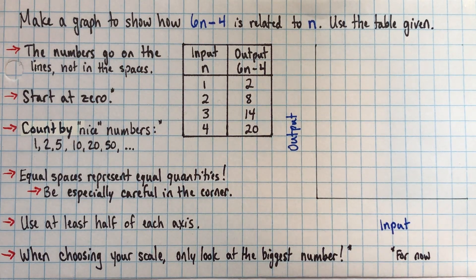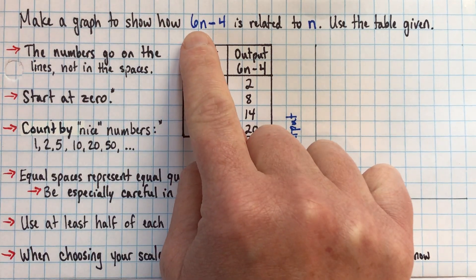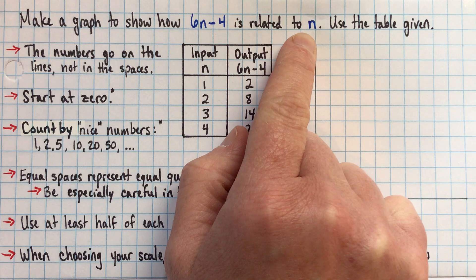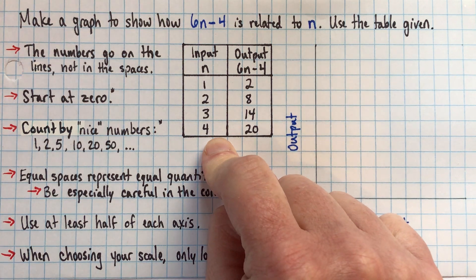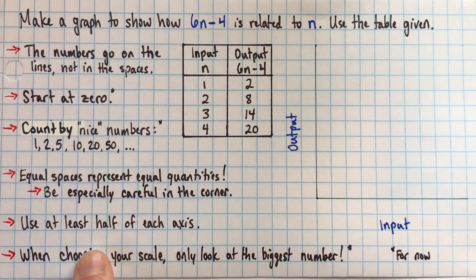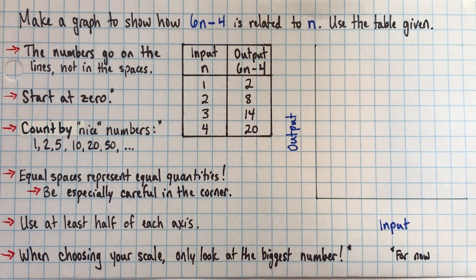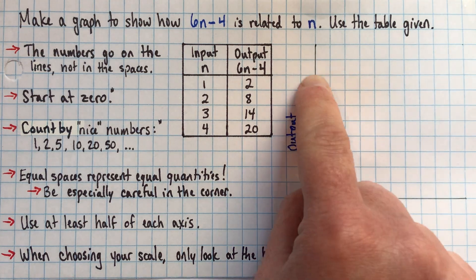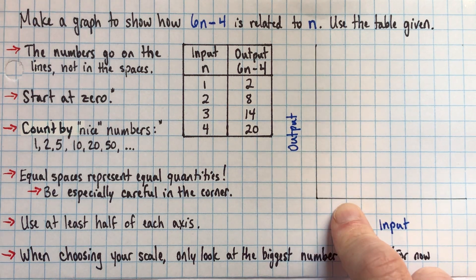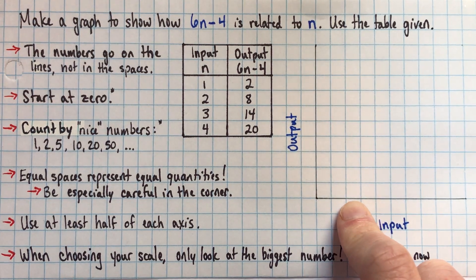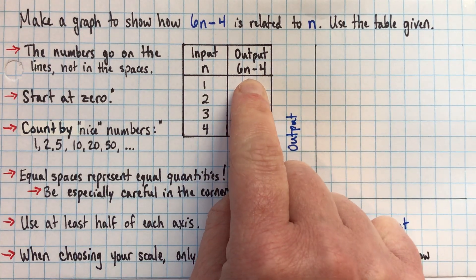Hi. In this video, I'm going to show you how to graph a linear relation. The question asks us to make a graph to show how 6n - 4 is related to n, and they ask us to use this table. If you don't have a table, the first thing you want to do is make yourself a table of values. I'm going to go through a list of rules, then look at some examples. The hardest part of making the graphs is actually choosing how to label your axes, choosing an appropriate scale and writing it properly. We'll look at a few examples where that's done wrong and a couple where it's done right. Then we'll put the points on, one for each row of the table.